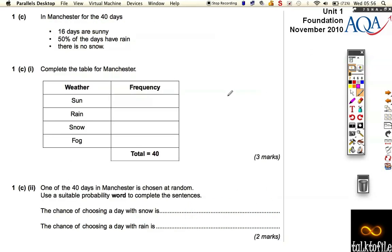Let's look at part C. In Manchester for the 40 days, 16 days are sunny, 50% of the days have rain, and there is no snow. So 16 days are sunny, so we need to add the frequency table here. 50% of the days have rain, so 50% is half. Half of your 40 must be 20.